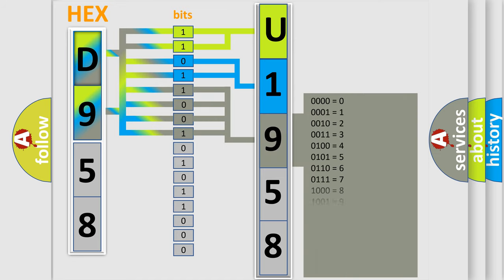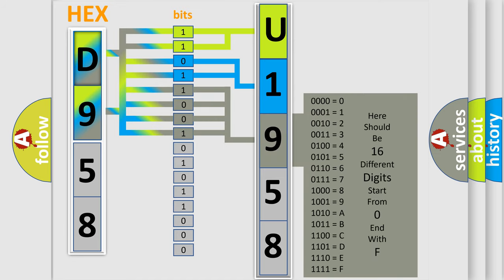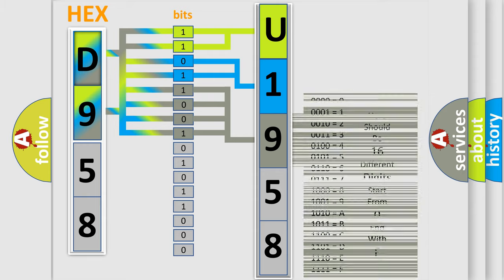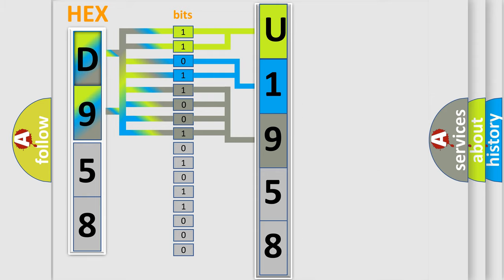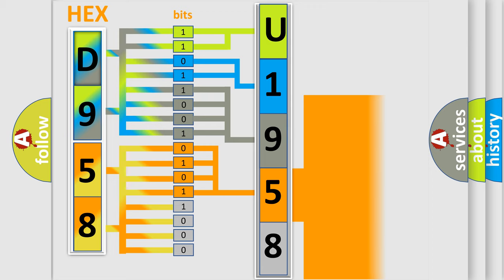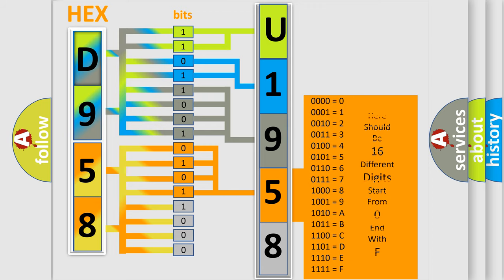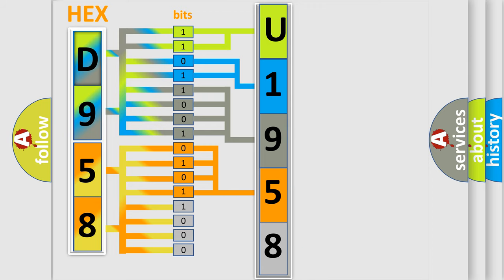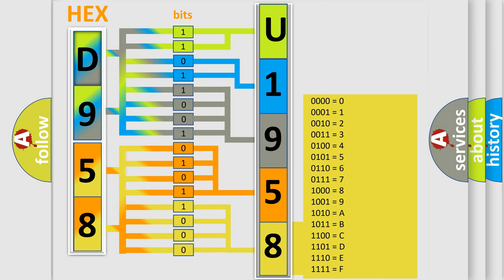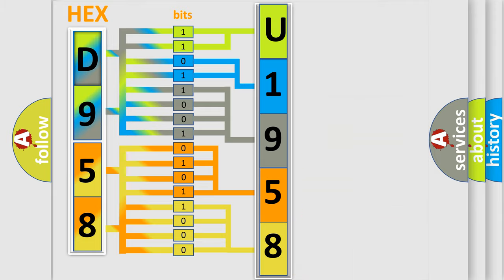The second byte is composed of a combination of eight bits. The first four bits determine the fourth character of the code, and the combination of the last four bits defines the fifth character. A single byte conceals 256 possible combinations.